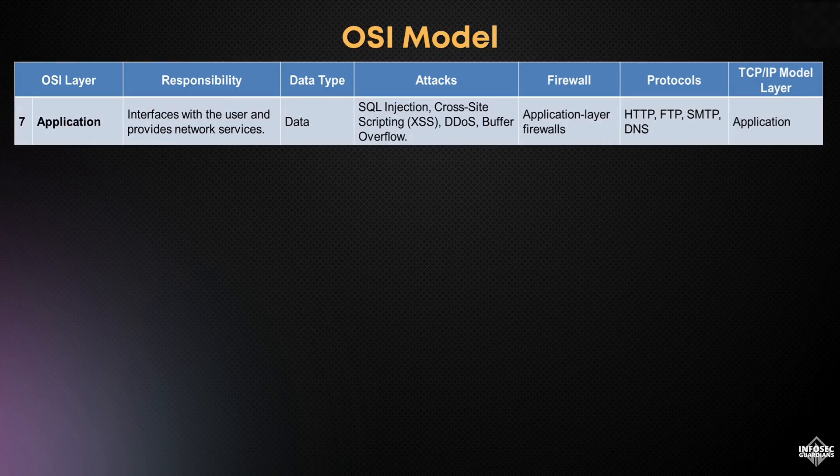At the top of the OSI model is layer 7, the application layer. This layer interfaces directly with the user and provides essential network services like web browsing, email, and file transfers. Here, data is in its most understandable form.